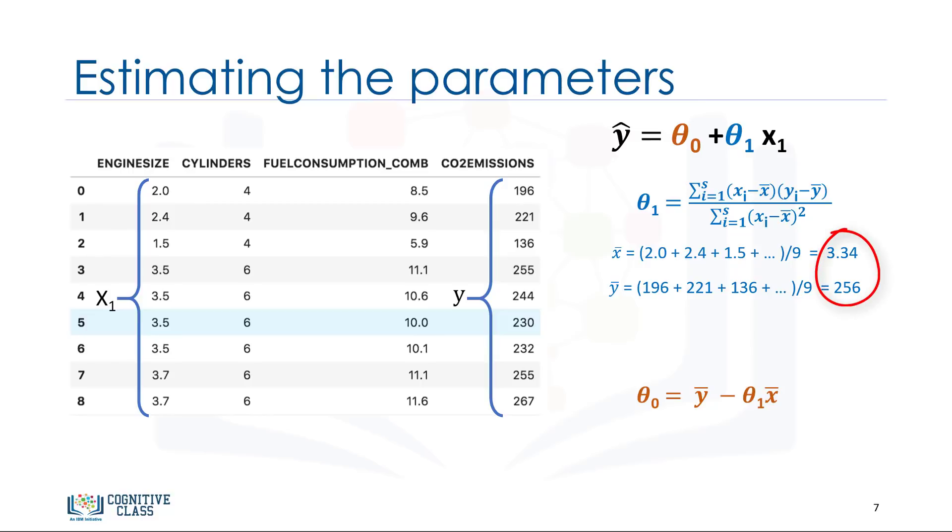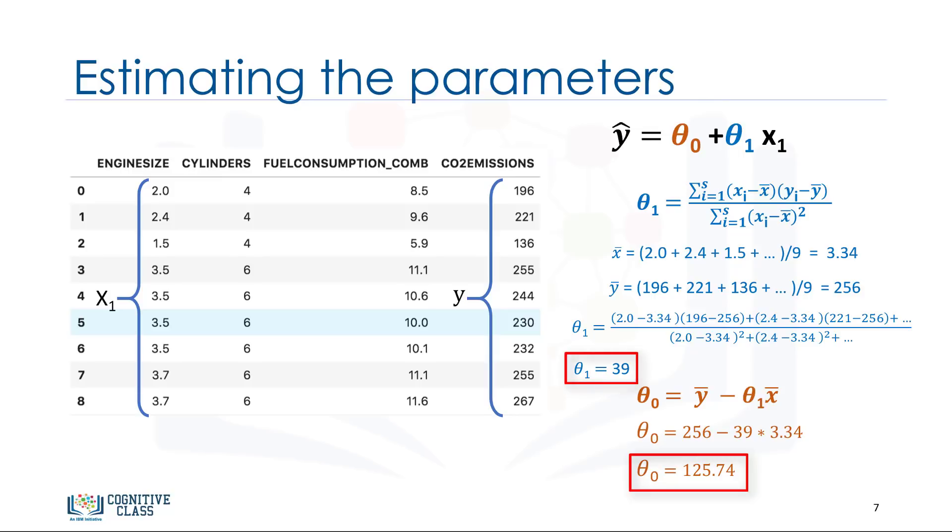First, we calculate the average of x1 and average of y. Then, we plug it into the slope equation to find theta1. The xi and yi in the equation refer to the fact that we need to repeat these calculations across all values in our dataset, and i refers to the i-th value of x or y. Applying all values, we find theta1 equals 39. It is our second parameter. It is used to calculate the first parameter, which is the intercept of the line. Now, we can plug theta1 into the line equation to find theta0. It is easily calculated that theta0 equals 125.74. So, these are the two parameters for the line, where theta0 is also called the bias coefficient, and theta1 is the coefficient for the CO2 emission column.